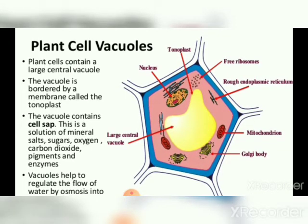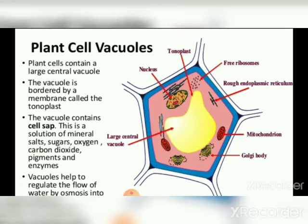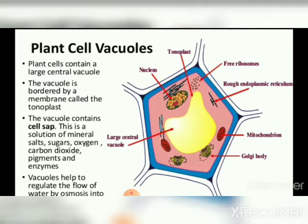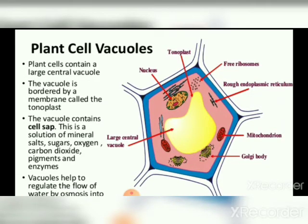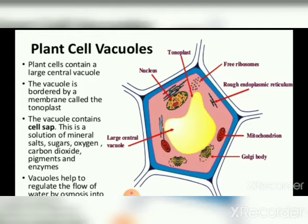The vacuole is separated from the cytoplasm by a membrane called the tonoplast. It has a number of transport systems for the passage of different substances. In mature cells, small vacuoles fuse to form a large central vacuole which occupies up to 90% of the volume of the cell. Large central vacuoles spread the cytoplasm in the form of a thin peripheral layer.